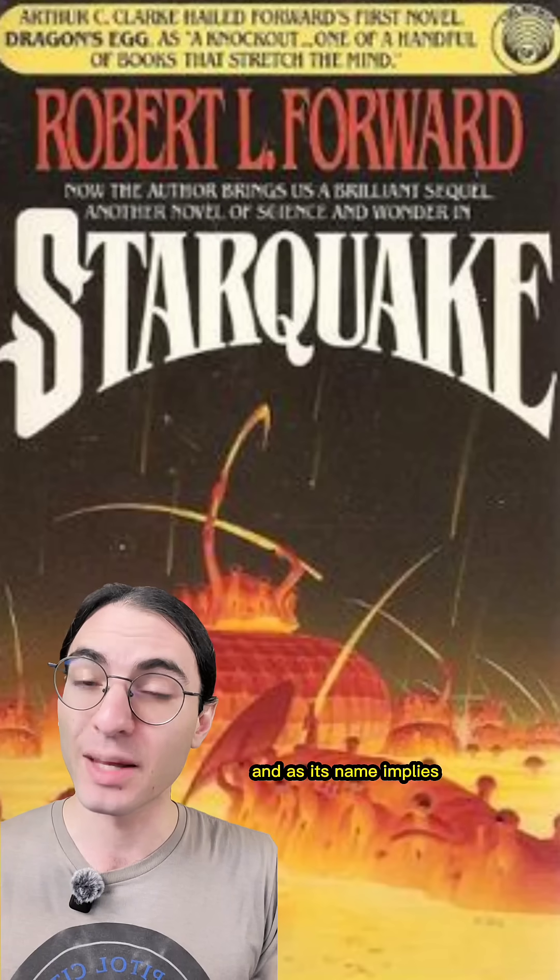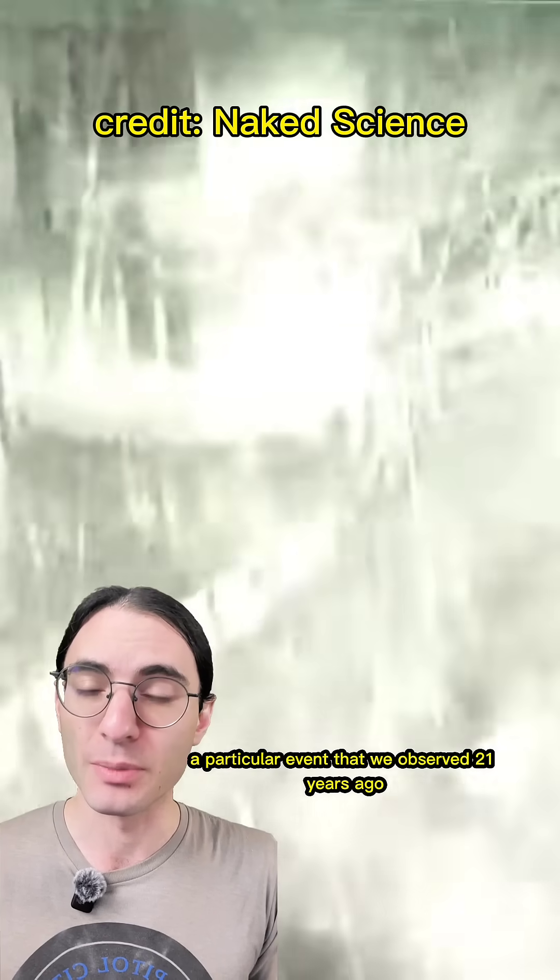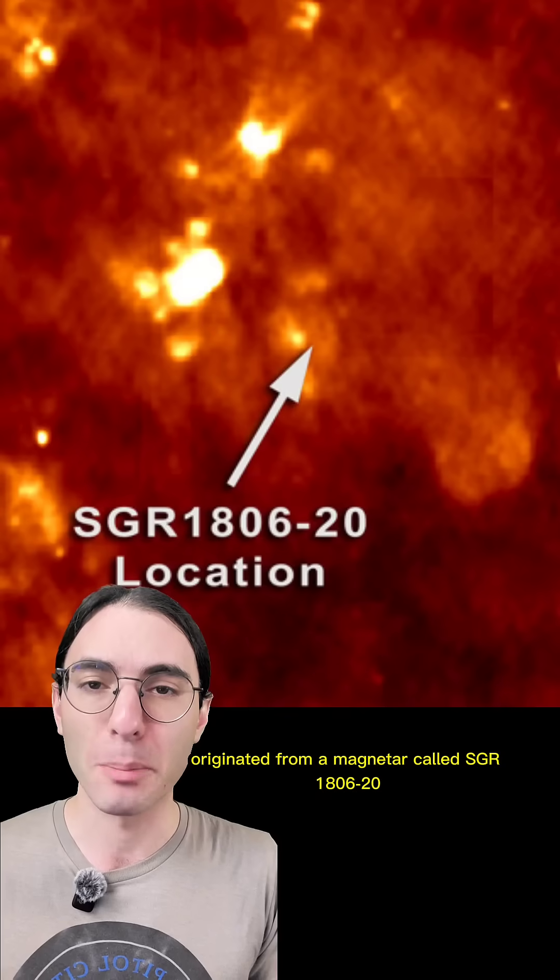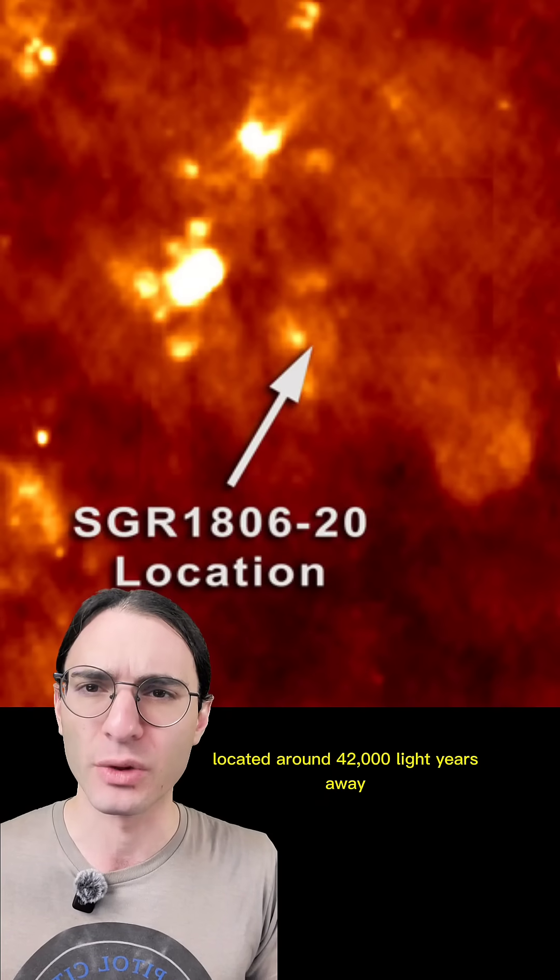It was caused by a starquake, and as its name implies, it's somewhat similar to an earthquake. The particular event that we observed 21 years ago originated from a magnetar called SGR 1806-20, located around 42,000 light years away.